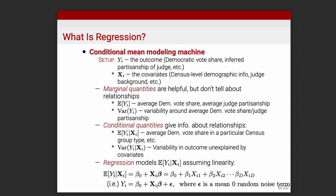We posit that the expected value of some outcome Y, as a function of X, equals a linear relationship. We have some intercept term and weights on all the covariates. The expected value of the outcome for a particular value of X equals some baseline beta-0, plus beta-1 times x1, plus some weight times x2, and so on. We had a more succinct linear algebra notation for this.